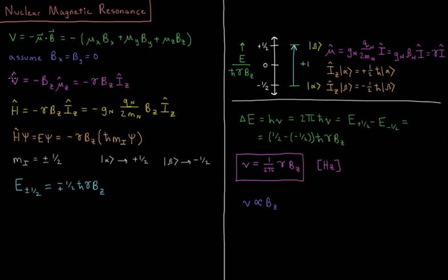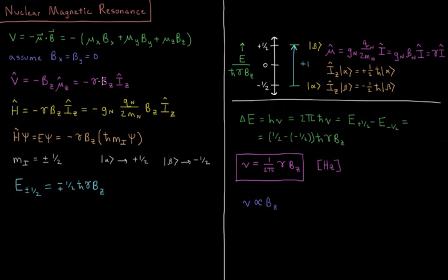When we go to operators, our magnetic potential energy operator is going to equal the negative z component of the magnetic field times our magnetic dipole operator in the z direction. From our previous video, this equals the magnetogyric ratio minus gamma times Bz times the z component of the angular momentum of our nucleus. So our Hamiltonian is going to equal minus gamma·Bz·Iz.